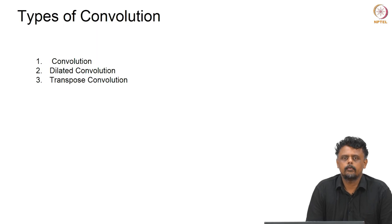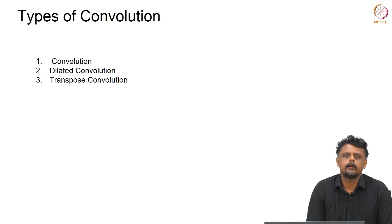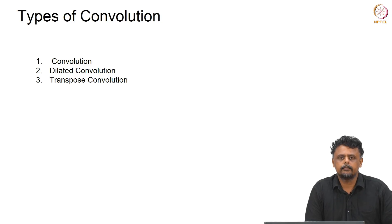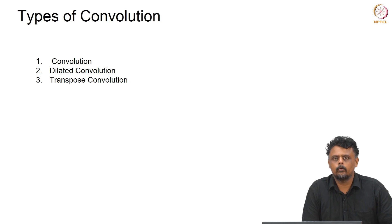In this video we will look at the different types of convolutions that are typically done in a convolutional neural network, and especially focus on the dilated and transpose convolutions, which are often used in deep networks and also in networks that have the encoder-decoder type of architecture.